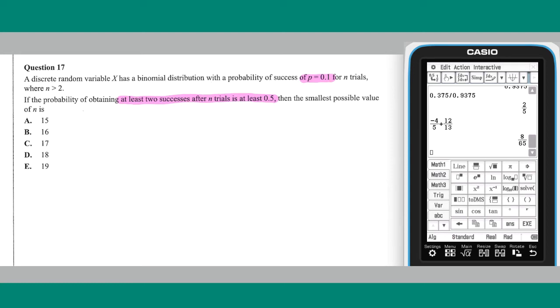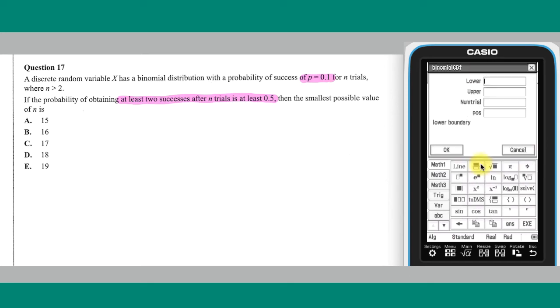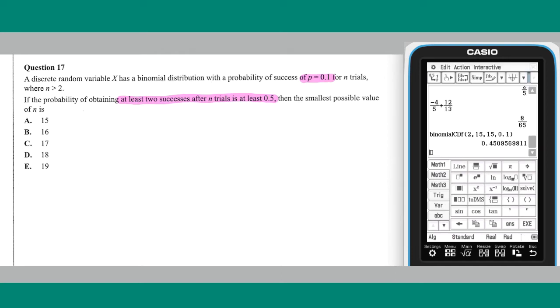we can start by calculating the probability of two or more successes for n equals 15, the smallest case given. We can do this via the interactive distribution menu of the ClassPad's main app. As the probability calculated is less than 0.5, n equals 15 is not the answer.